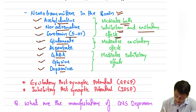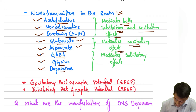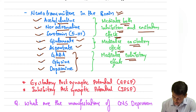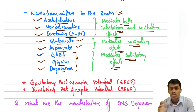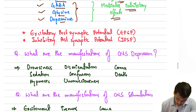Glutamate and aspartate both help in mediating the excitatory effects in the brain. GABA, glycine, and dopamine help in mediating the inhibitory effects on the brain. So these are all the neurotransmitters and they mediate either inhibitory or excitatory effects.